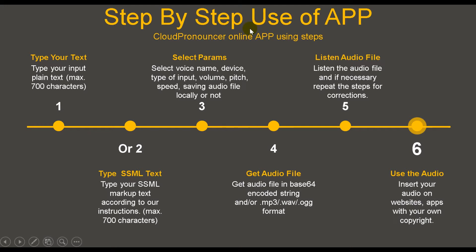Step-by-step use of the Cloudpronouncer online app. Type your input — plain text up to 700 characters, or SSML markup text according to our instructions, maximum 700 characters. Then select parameters such as voice name, device, type of input, volume, pitch, speed, and whether to save the audio file locally or not.